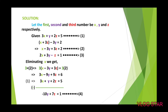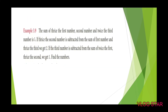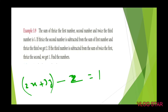Now we form the third equation. If the third number z is subtracted from the sum of twice the first, that is 2x, and thrice the second, that is 3y, we get 1. So the third equation is: 2x plus 3y minus z is equal to 1.